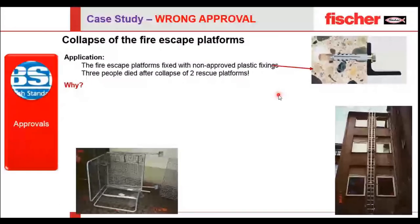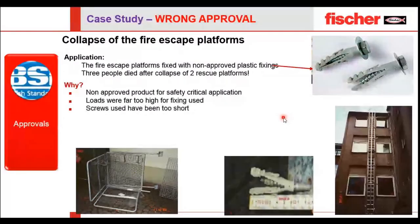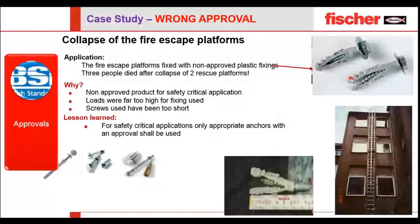The last case study is about approvals. A fire escape platform was fixed using a non-approved anchor — it had no approvals. As a result, the action loads were too high for the fixings used, and the screws were too short. The lesson is: if you are using an anchor for a fire escape, you need a properly approved anchor. If a fire breaks out, people need to escape from that platform, and if the anchor is not fire-approved, it will not withstand the load and the system will collapse.